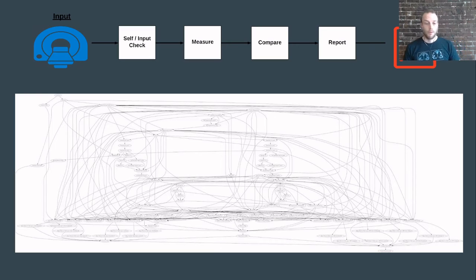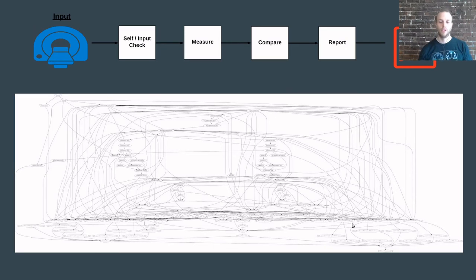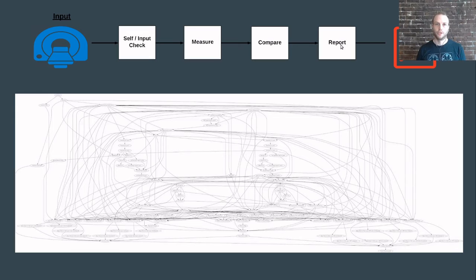Here is what our device looks like conceptually. The input comes in and undergoes a bunch of self and input checks. The measure module is where we've expressed FreeSurfer as a CWL workflow — that big workflow at the bottom is FreeSurfer expressed as CWL. Then there's a compare module where measurements are compared to a normative reference, and finally all the results are bundled to be reported.